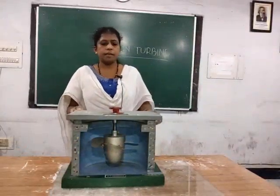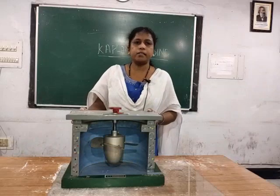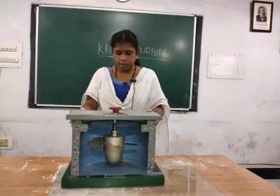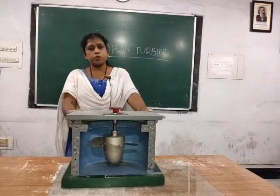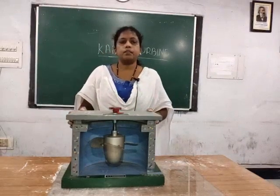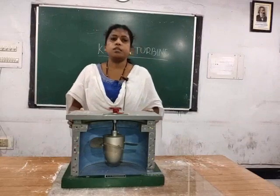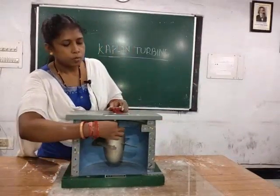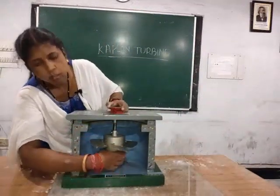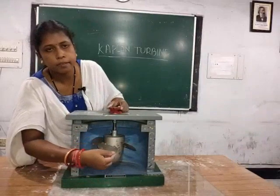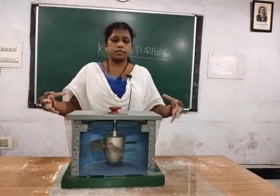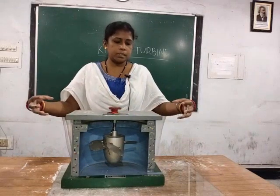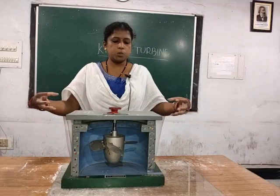Next we will see a model of a Kaplan turbine. A Kaplan turbine is an axial flow reaction turbine. In an axial flow turbine, water flows through the runner along a direction parallel to the axis of rotation. It is a reaction turbine because both pressure energy and kinetic energy are available. This model consists of a shaft, a hub, and runner vanes. Water enters through the scroll casing towards the guide vanes.